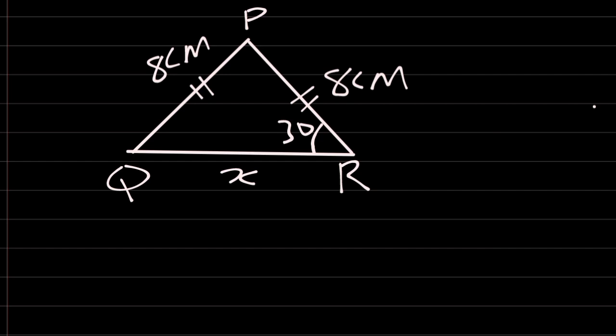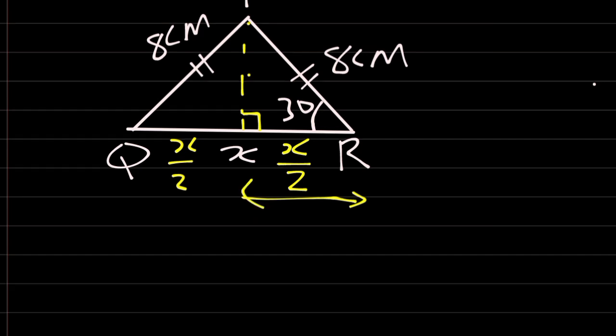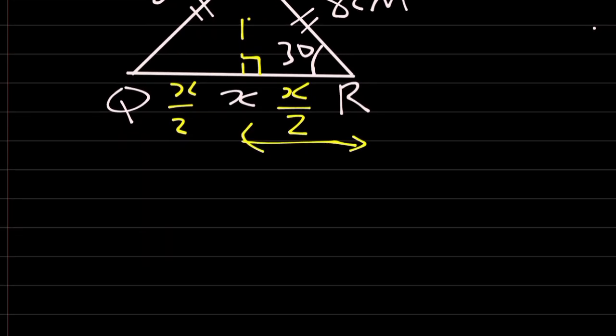The next thing we are going to do now, let's construct a line from P to meet QR. And that line is going to meet QR at right angle. And the line will also bisect QR into two equal parts. So that means this part is actually X over 2. And here is X over 2.